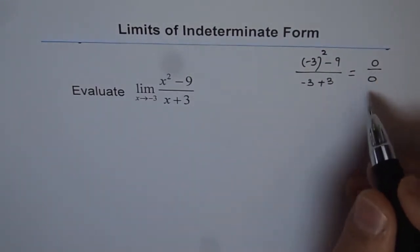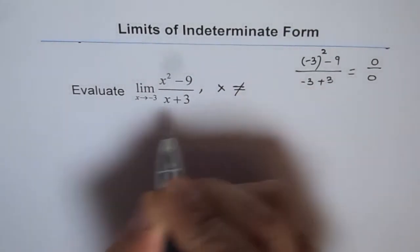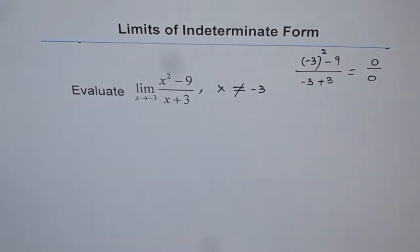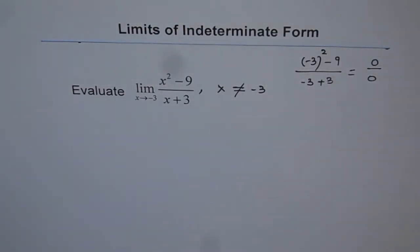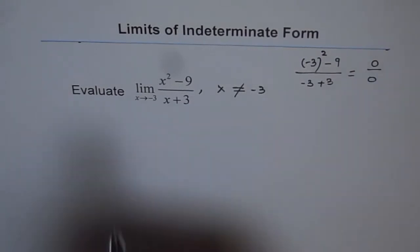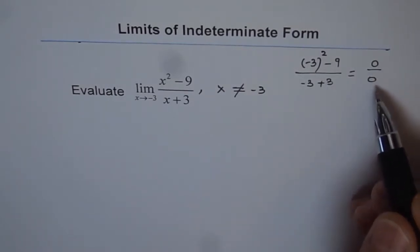Now in such cases, it is very clear that x cannot be equal to minus 3. Since if you put minus 3, the denominator becomes 0 and anything over 0 is not defined. Well, 0 over 0 gives us something more into it. It indicates that when you plug in minus 3, your numerator is also 0 and denominator is also 0.